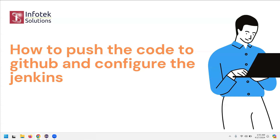Hello everyone, welcome back. In this video we'll see how to push the code to GitHub and configure Jenkins. We'll upload the code to GitHub and then run it on Jenkins. I've done this in my last project as well, but here I'm going to add a few more things in Jenkins. My main focus is how to schedule the code, and in the next video we'll see how to add pipelines.